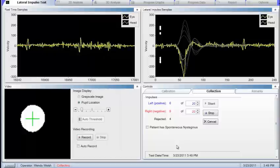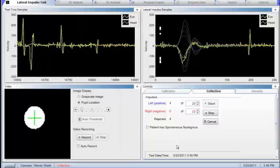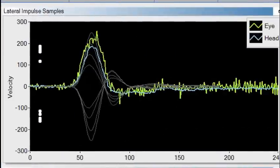There are algorithms built into the system that will reject bad head impulses. While you are doing the head impulse testing, you will want to look at the real time trace window and the lateral impulse window.